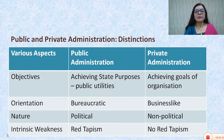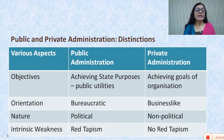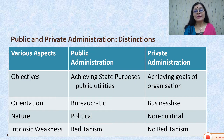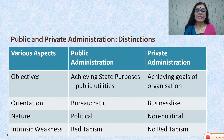Now let us see what are the major distinctions between public and private administration. In terms of objectives, public administration aims at achieving state purposes — that is, public utilities, providing essential services to people — whereas private administration aims at achieving goals of the private organization. In terms of orientation, public administration is bureaucratic and private administration is business-like.